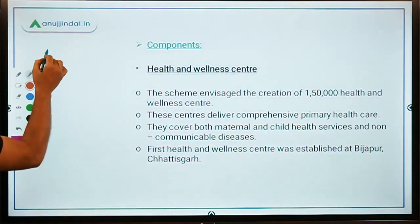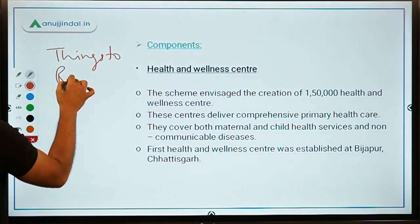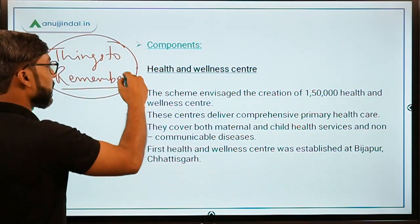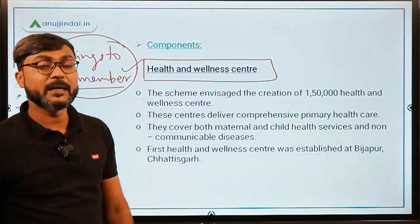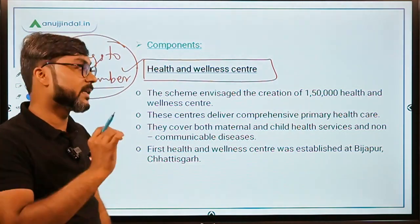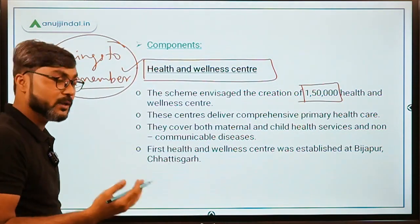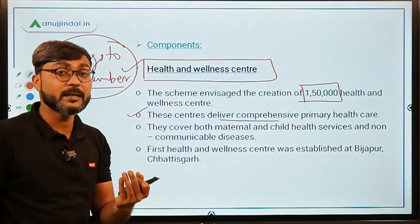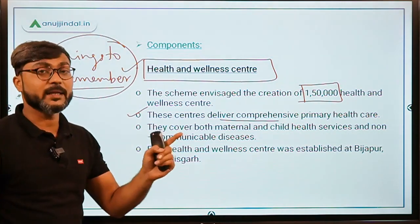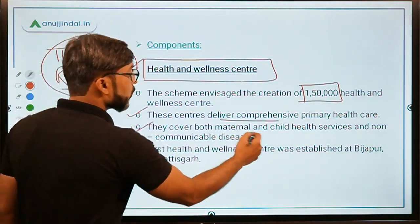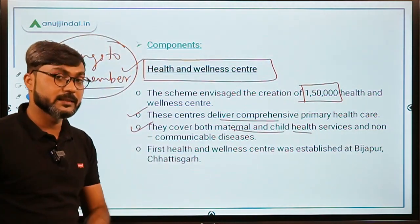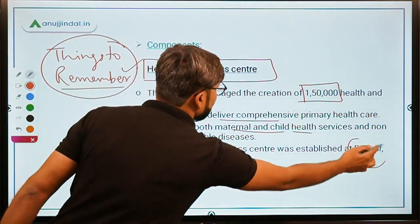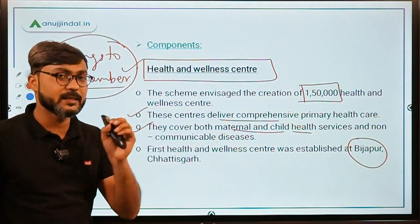There are two important components of the scheme. Component one is Health and Wellness Centers. According to the scheme, the government will build one lakh fifty thousand Health and Wellness Centers across the country. These centers deliver comprehensive primary healthcare covering both maternal and child health services as well as non-communicable diseases.